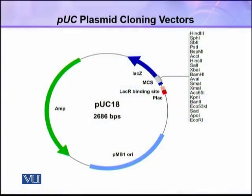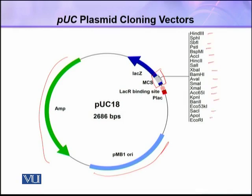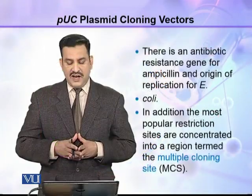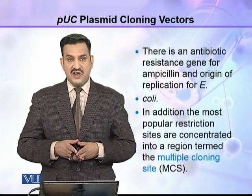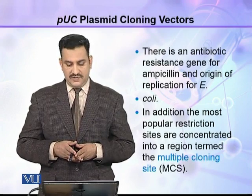This is the PUC plasmid, and you can see this is the ampicillin resistance gene. This is the origin of replication and this is the multiple cloning site, which contains the restriction sites of a number of restriction enzymes. There is an antibiotic resistance gene for ampicillin and an origin of replication for E. coli.